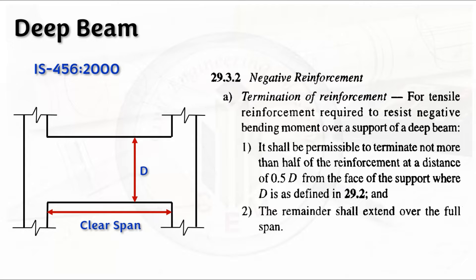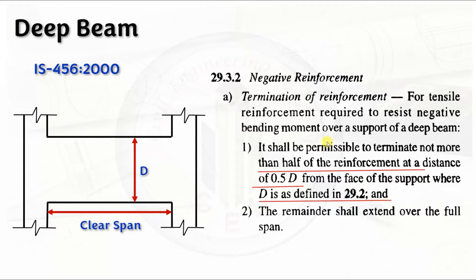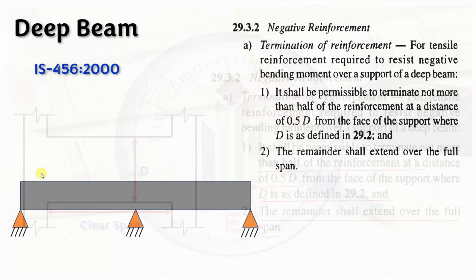In IS 456:2000, Clause 29.3.2 represents the negative reinforcement of deep beam. It states: for tensile reinforcement required to resist negative bending moment over a support of a deep beam, it shall be permissible to terminate not more than half of the reinforcement at a distance of 0.5d from the face of the support, where d is defined in Clause 29.2. The remainder shall extend over the full span.